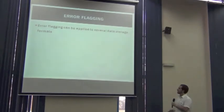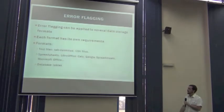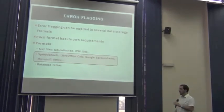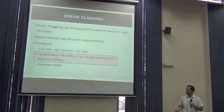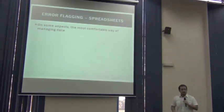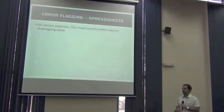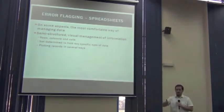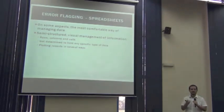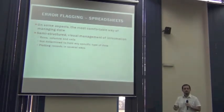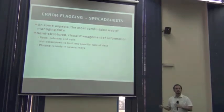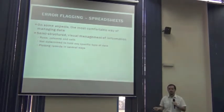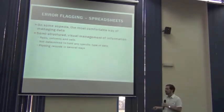Error flagging itself can be applied to several data storage formats, and each format has its own requirements. We are going to focus on spreadsheets and on how to track records using spreadsheets. Spreadsheets are the most comfortable way of managing data — they are not the most powerful, but they allow a semi-structured visual management of information. Data is organized in rows and columns but columns are not restricted to any specific type of information. We can also plot the records to make visualizations that help in understanding how to flag records, and we can use calculations inside cells.